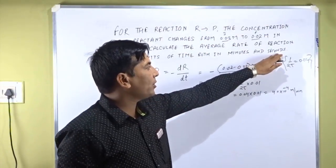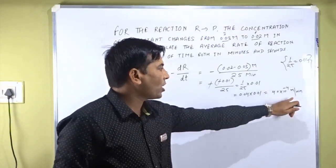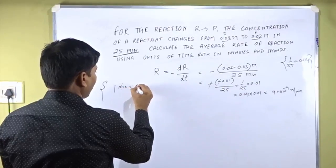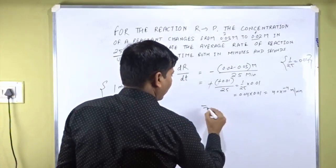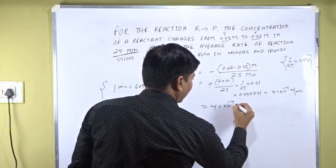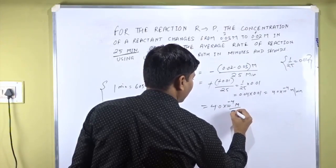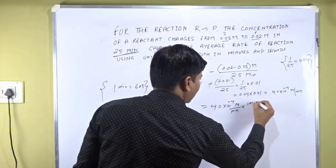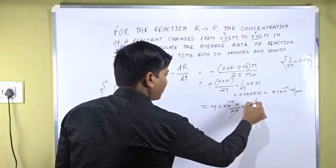Now the problem also asks us to calculate the rate per second. Therefore, we convert minutes into seconds. We know that 1 minute equals 60 seconds. So we multiply 4.0×10⁻⁴ molarity per minute by 1 minute per 60 seconds. The minute units cancel out.